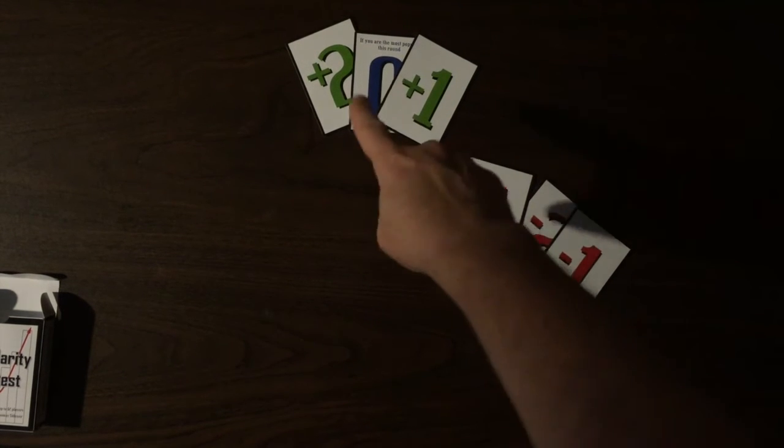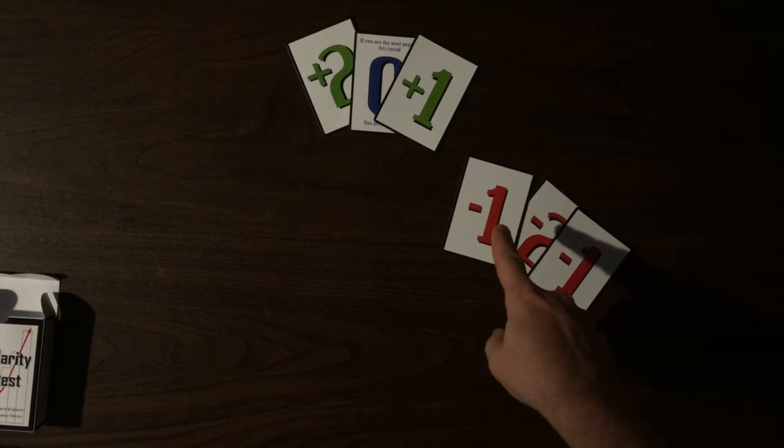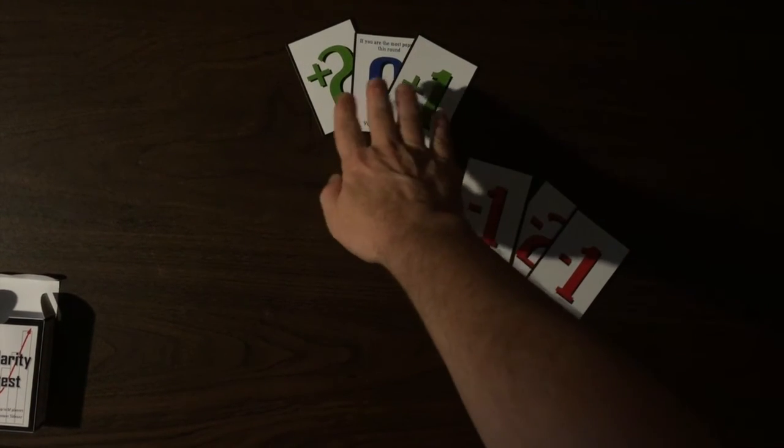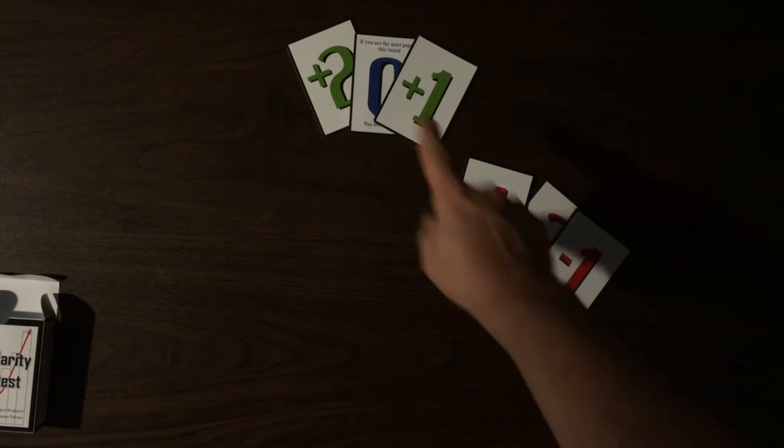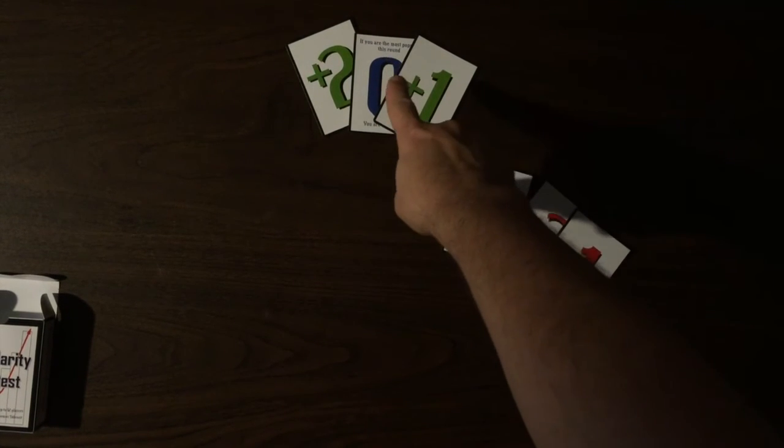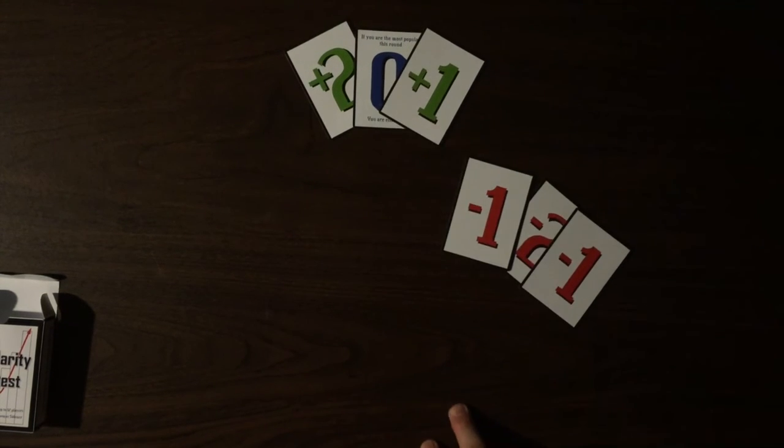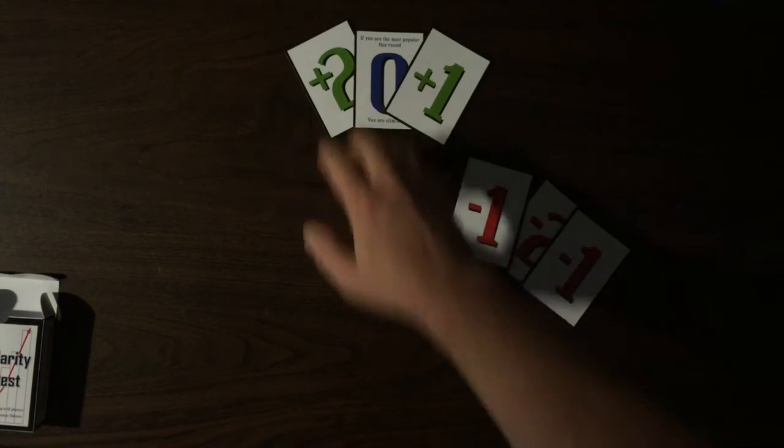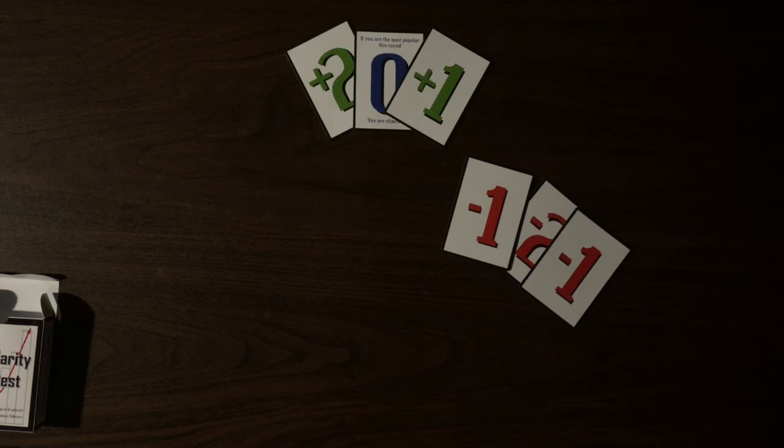Now, if there are only two players left in the game, then this player would be the ultimate winner because when there's only two players left in the game, the zeros are null and void. So this does not take effect. In this situation, this person is the most popular and they win the game.